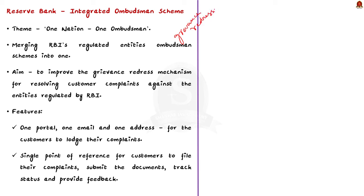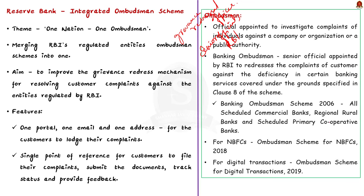The Banking Ombudsman redresses customer complaints against deficiency in certain banking services like non-payment or inordinate delay in payment of cheques, covered under clause 8 of the Banking Ombudsman Scheme 2006. Similarly, RBI has a separate ombudsman scheme for NBFCs and for digital transactions — the Ombudsman Scheme for NBFCs launched in 2018 and the Ombudsman Scheme for Digital Transactions launched in 2019.